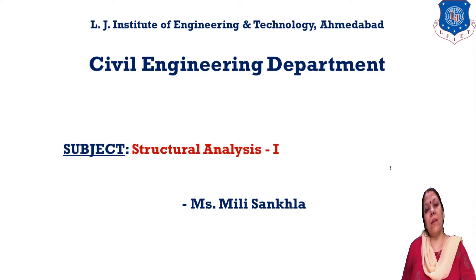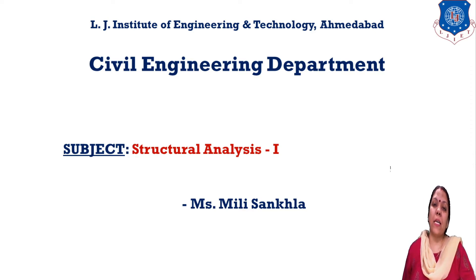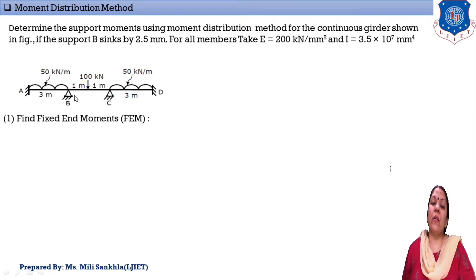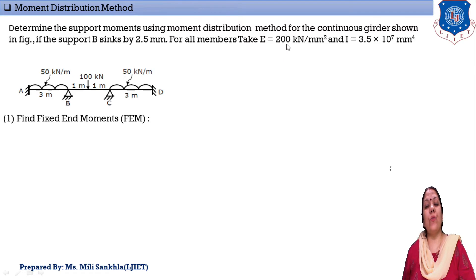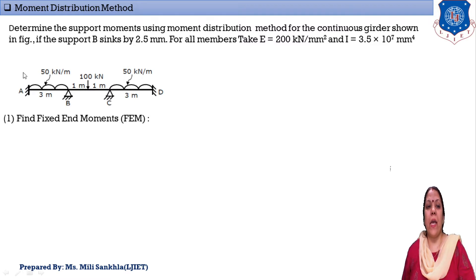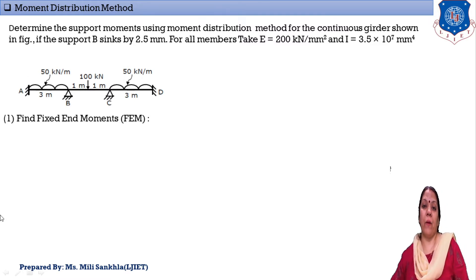Good morning students. I am Melissa Akhla and in our subject Structure Analysis Part 1, today we solve an example of the moment distribution method. This is our second example. Before starting, we read the given data properly: determine the support moment using the moment distribution method for a continuous beam where support B settles by 2.5 mm. For all members, E = 200 kN/mm² and I = 3.5 × 10⁷ mm⁴. We will also draw the BM diagram.